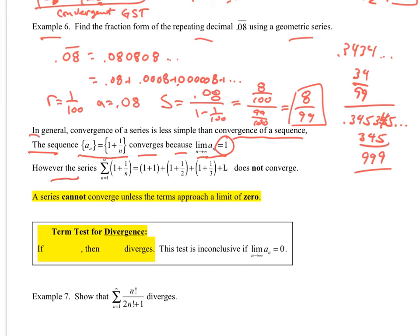Now, if we look at a series, the series of this thing would add these numbers together. And if you notice, we keep on going. It should be dot, dot, dot. This thing does not converge because each one of these terms includes a 1.